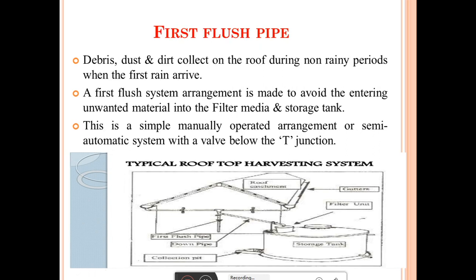The next component is the first flush pipe. During the first rain, debris, dust, and dirt collected on the roof during the non-rainy period are washed off. A first flush system arrangement is made to avoid unwanted material entering the filter media and storage tank, which would otherwise disturb filtration efficiency. This is a simple manually operated or semi-automatic system with a valve below the T-junction. The first rain is allowed to pass through the first flush pipe and is not stored in the storage tank.